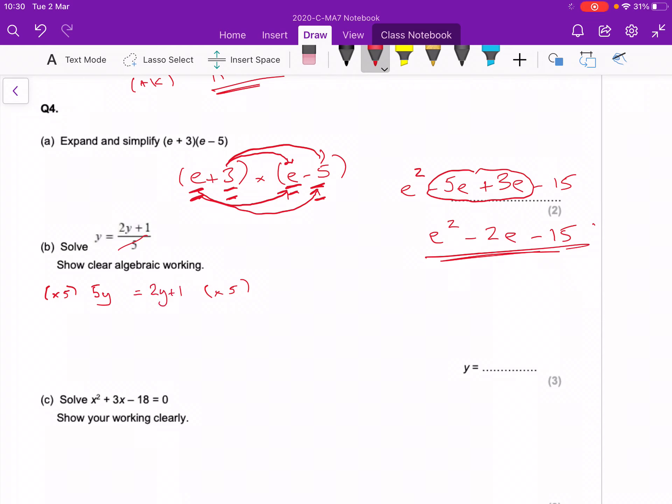This now has got a y on both sides. Always get rid of the lowest one, so I need to get rid of this plus 2y, and I do that by taking away 2y on both sides. If you do that to the left, you'll be left with 3y. The 2y disappears and you're left with one, so y is going to be equal to one third.